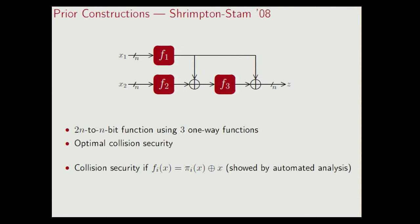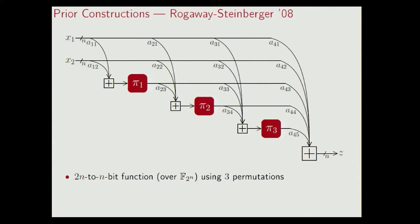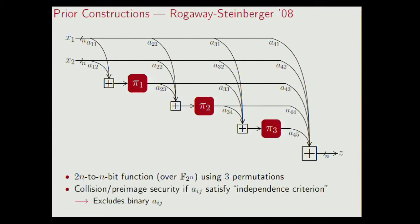Another construction is by Roggewe and Steinberger, who essentially consider a two N to one N-bit compression function. At first sight it looks a bit complicated, but in fact it's not. What happens here is that the input to pi 1 is a11 times x1 plus a12 times x2, where addition and multiplication is done over the finite field of 2^n elements. The aij's here are constants and they essentially define this compression function. Roggewe and Steinberger proved that this construction achieves optimal collision and pre-image security if the aij satisfies some technical independence criterion.